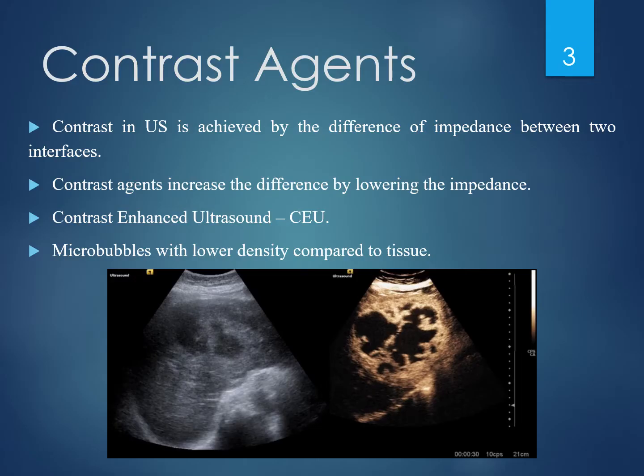The main contrast in ultrasound imaging comes from the difference between the tissue impedance at the tissue-to-tissue interface. In normal operations, some areas of the body including liver tissue, different capillaries, and heart structures are not always easy to spot. Scientists researched and developed contrast agents to enhance the contrast by increasing the impedance mismatching between the interface. This method is called contrast enhanced ultrasound, or CEU for short.